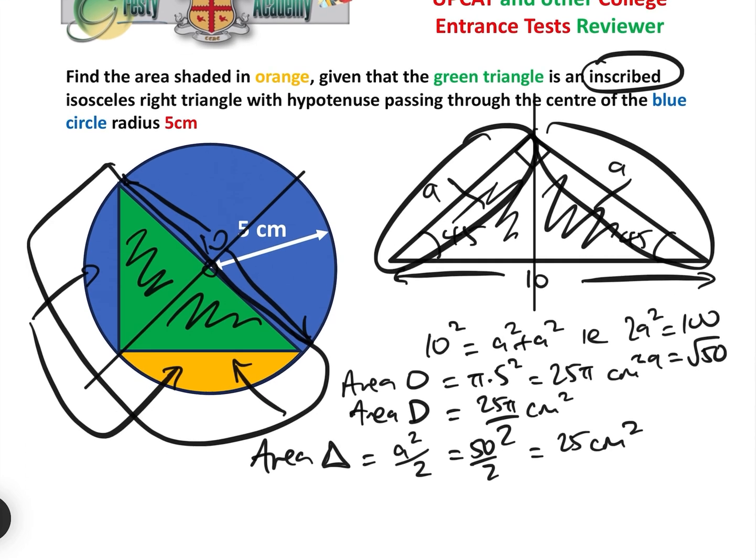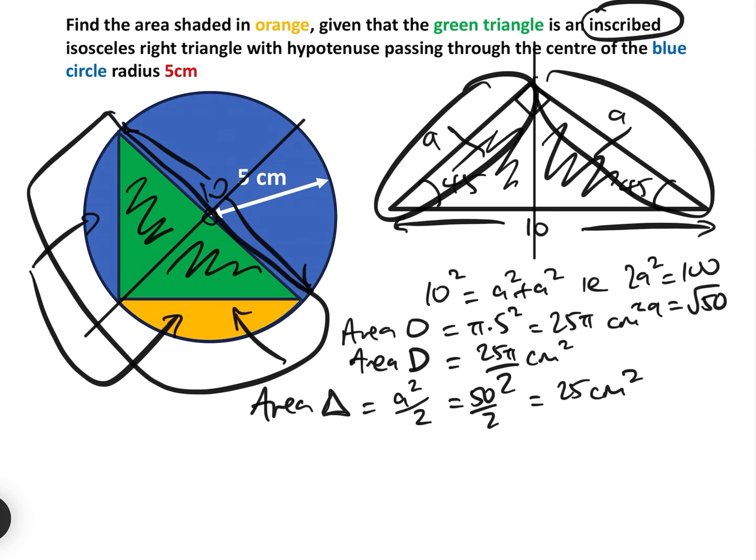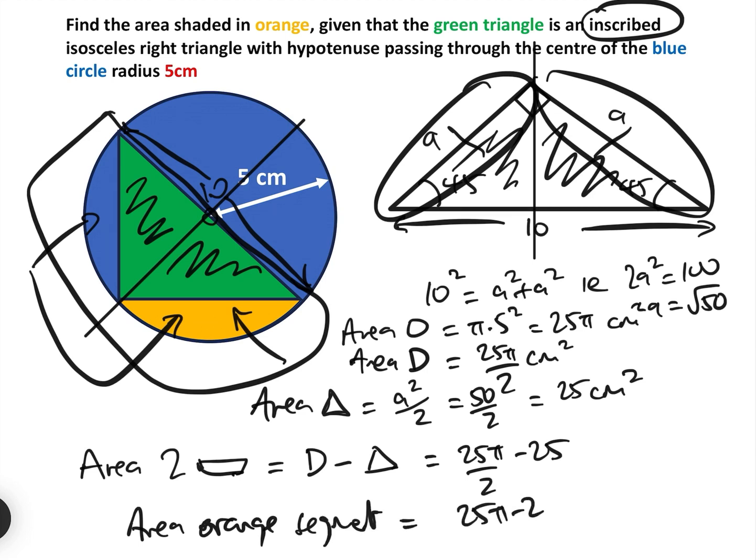Now all we need to do is the area of the two segments is equal to the area of the semicircle, take away the area of the triangle, which equals the area of the semicircle is 25 pi over 2, and the area of the triangle is 25. So therefore the area of the orange segment is half that, which is 25 pi over 2 minus 25 a half of that, or if we take the 25 out, 25 over 2 pi over 2 minus 1 centimeters squared.